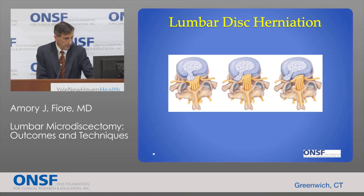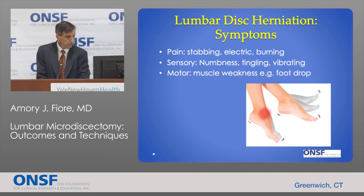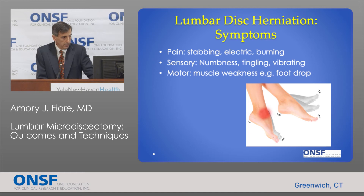You can have disc herniations that occur in different anatomic zones. You can have a disc herniation more on the outside of the spine, which will affect the nerve coming out at that level. Or more commonly, you can have a disc herniation inside the spinal canal, which affects the nerves inside — and that'll give you different symptoms depending on where it is at a particular level. The symptoms are typically pain, which could be a stabbing, electric, or burning pain; sensory symptoms such as numbness, tingling, or vibrating; and then motor symptoms, which are muscle weakness — typically such as a foot drop where you can't bend your foot up. That's the classic symptom of an L4-L5 disc herniation.